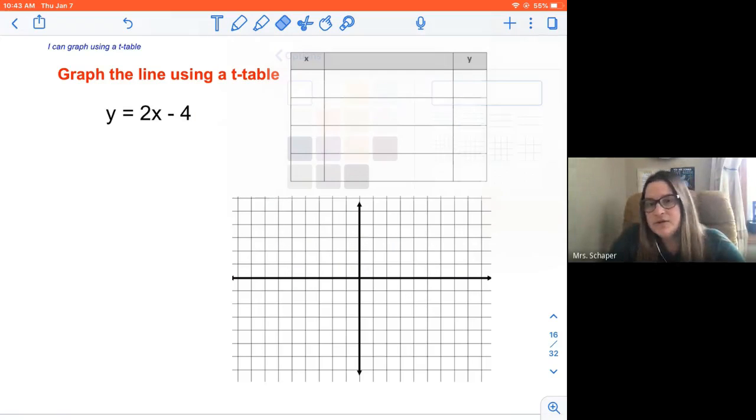So what we're going to do is we're going to graph using a t-table. I've got two examples for you, and then you're going to work on your worksheet. My equation is y = 2x - 4. I want to take it from the algebraic and turn it into a graph, again continuing to work on those four forms of functions: t-table, graph, algebraic, and verbal meaning words.